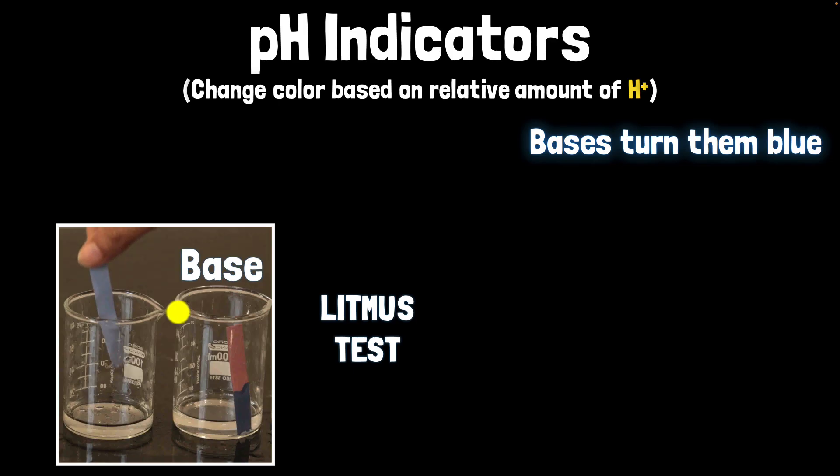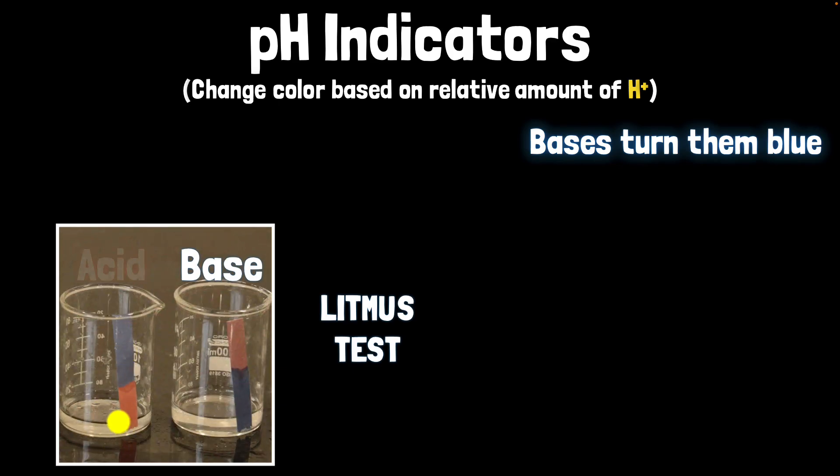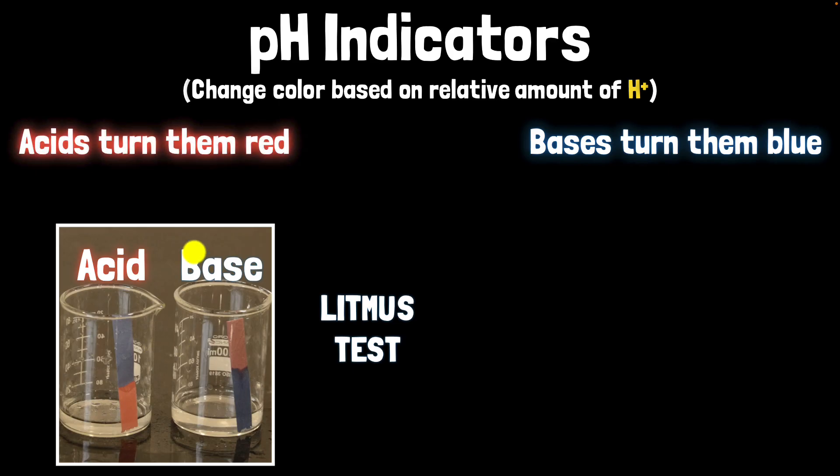And similarly, the compounds in a blue litmus paper are already in their basic form. So after dipping into a solution, if it stays blue, we know that the solution must be basic or of course it can be neutral as well. But after dipping, if it turns red, we know the solution must be acidic. And let's see what's going to happen now. And there you have it. It turned red. So we know that this solution over here must be an acid. Because acids turn blue litmus red.